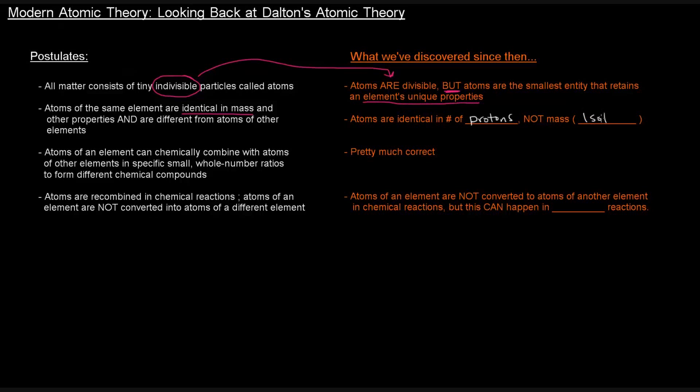This is because isotopes exist. You can have different masses, different mass numbers, but have the same atom, the same element. But he is right that all atoms have particular identities that are different from other elements.